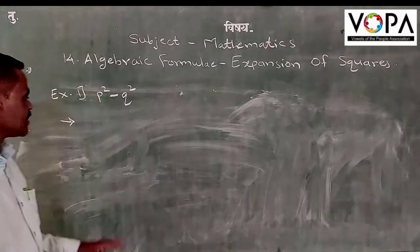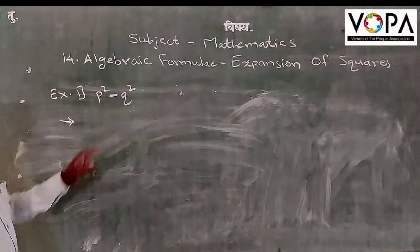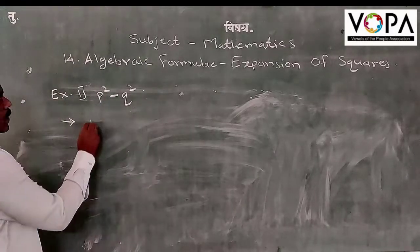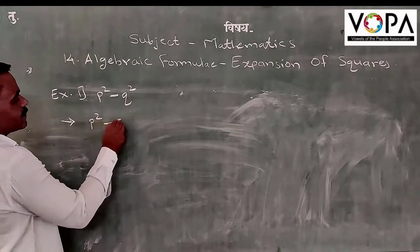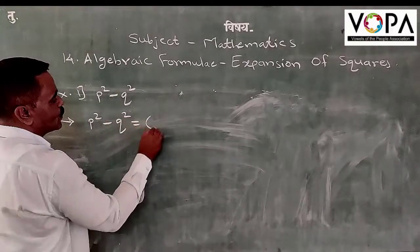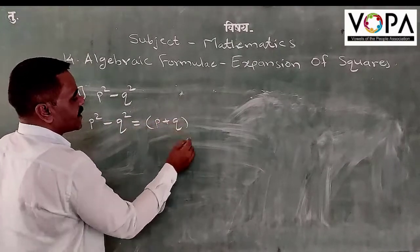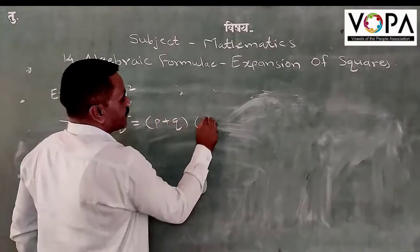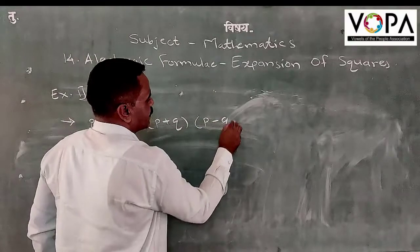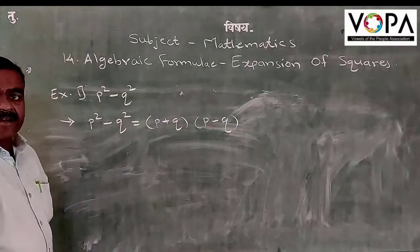Let us see one example: t² minus q². So t² minus q² is equal to t plus q in one bracket and t minus q in the other bracket.